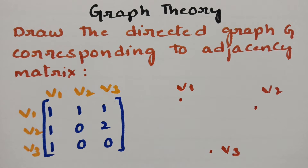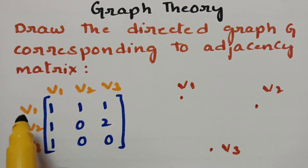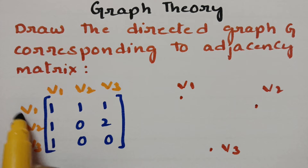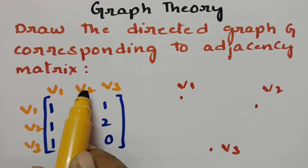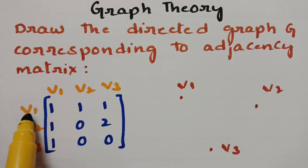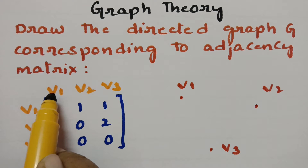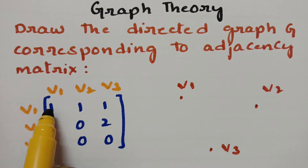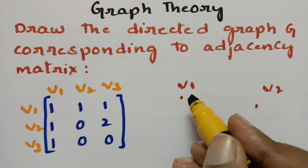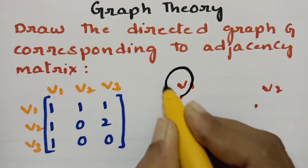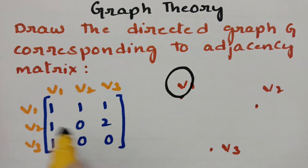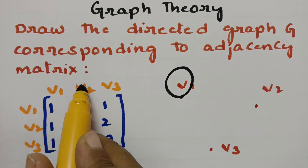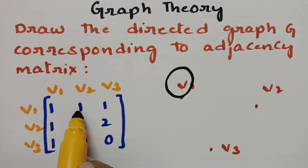Before going to draw this graph, there are relations. If I take vertex V1, it has a relation with the other vertices V1, V2, and V3. V1 and V1 has one edge — V1 to V1. It has one edge, and next V1 to V2 has one edge.